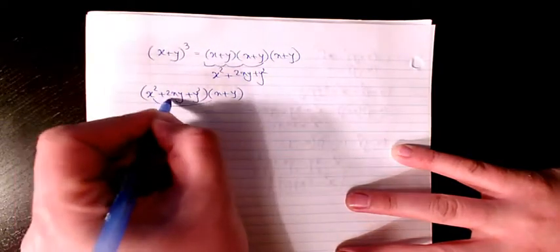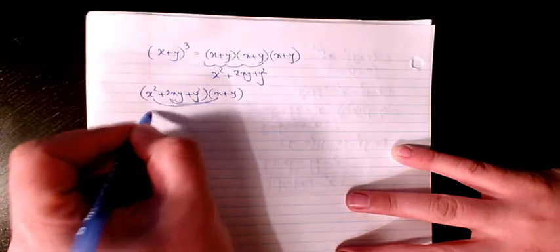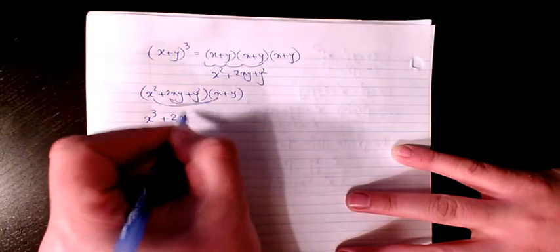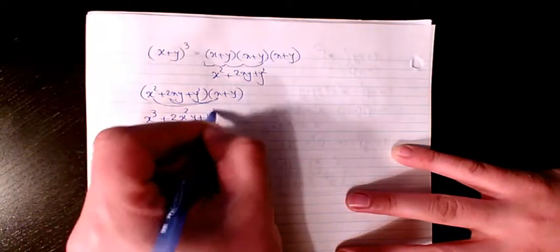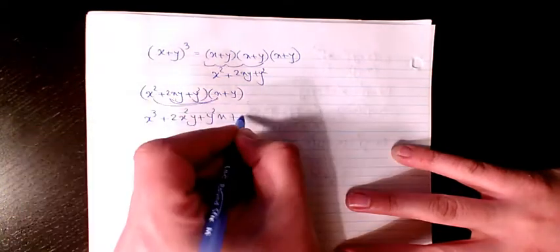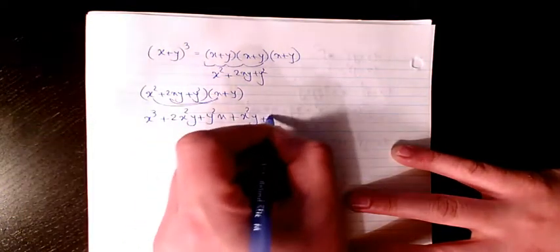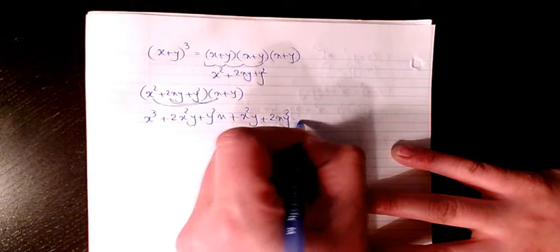Multiply this by this, this by this, and this by this. So it will be x³ + 2x²y + y²x. And on this side I have x²y + 2xy² + y³.